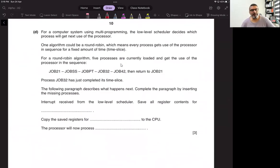A computer system uses multi-programming. The low level scheduler decides which process will get next to the processor. You have to know that there are three types of schedulers: high level, low level, and medium level. High level schedulers put the job in the RAM and then into the ready queue.